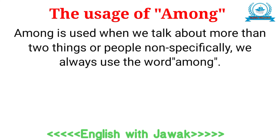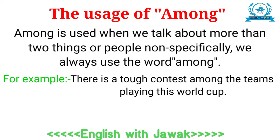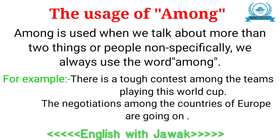لیکن اگر چیزیں مخصوص نہ ہوں اور دو سے زیادہ ہوں تو اس صورت میں among کا use کریں گے۔ مثال: 'There is a tough contest among the teams playing this World Cup.' یہاں ٹیمیں مخصوص نہیں ہیں اس لیے among آیا۔ دوسری مثال: 'The negotiations among the countries of Europe are going on.' یہاں بھی یورپ کی countries کا نام نہیں لیا گیا، اس لیے among کا use ہوا۔ اگر نام لیا جاتا تو between استعمال ہوتا۔